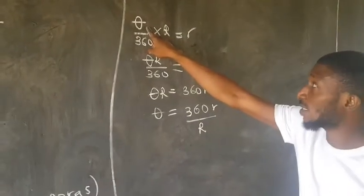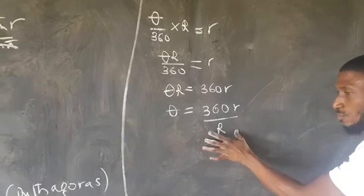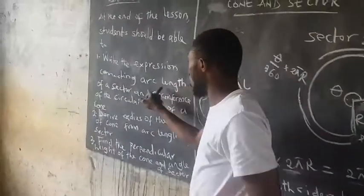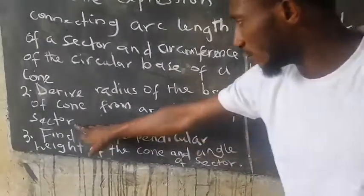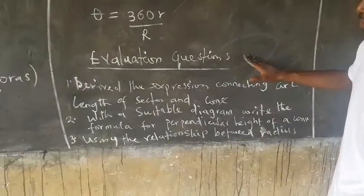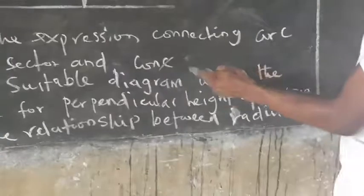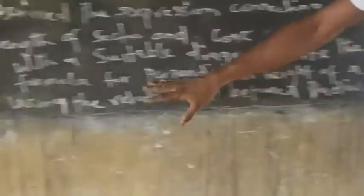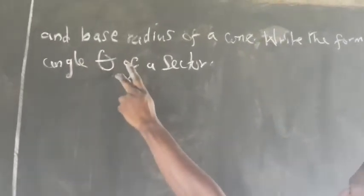At the end of this lesson, you should be able to derive the expression connecting the arc length and sector of a circle, and derive the radius of the base of the cone from an arc length of the sector. Evaluation questions: one, derive the expression connecting arc length of the sector and cone; two, with a suitable diagram, write the formula for perpendicular height of the cone; three, using the relationship between radius of the sector and base radius of the cone, write the formula for theta of the sector.